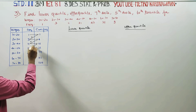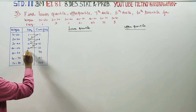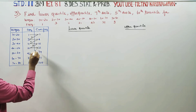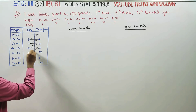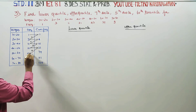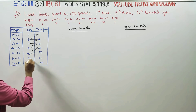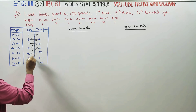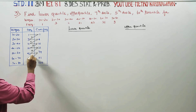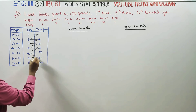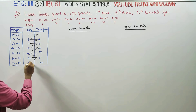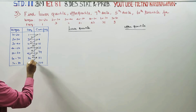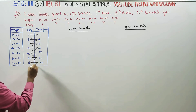Continuing the cumulative frequency table: 15, 21, 36, 43, 79, 79, 32, 111, 111, 9, giving a total of 120.